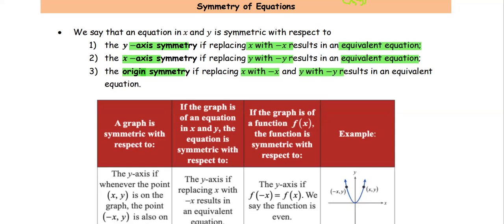For the graphical interpretation: symmetric with respect to the y-axis means the graph flips from the left to the right — we replace x with negative x and get the same form of the equation. For symmetry with respect to the x-axis, that means the upper portion reflects to the lower portion, or if we replace y with negative y, we get the same x-value.